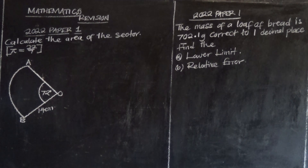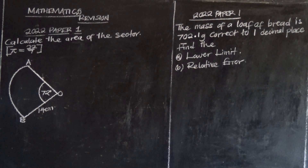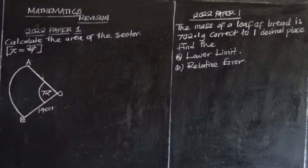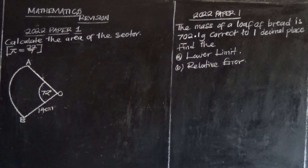Let's look at the 2022 Paper 1 question on mensuration. Calculate the area of the sector below, taking π as 22/7. We have been given a sector with radius 14 centimeters, and the angle subtended by arc AB is 72 degrees. We are going to calculate its area.